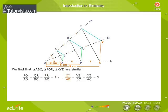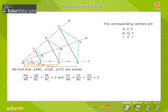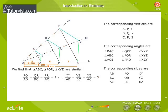And XY by AB is equal to YZ by BC is equal to XZ by AC. That is equal to 3.